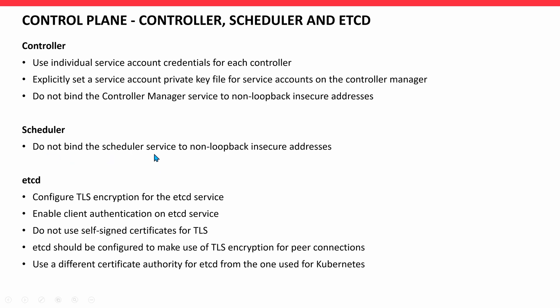For the Scheduler, do not bind the scheduler service to non-loopback insecure addresses. For the etcd database, configure TLS and enable client authentication on the etcd service. Do not use self-signed certificates for TLS — use a CA authority or a commercial certificate to protect etcd. etcd should be configured to make use of TLS encryption for peer connections. If you have etcd high availability, the communication between all etcd nodes should happen using TLS encryption. Use a different certificate authority for etcd from the one used for Kubernetes — for example, if you have certificate authority vendor one for the API server, use a different vendor certificate authority for the etcd database.